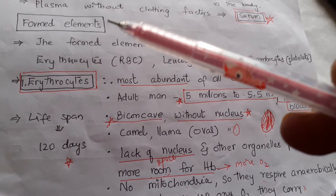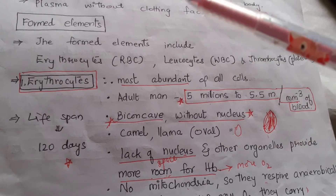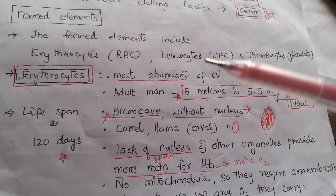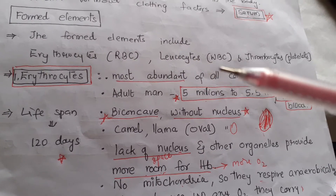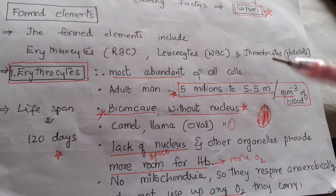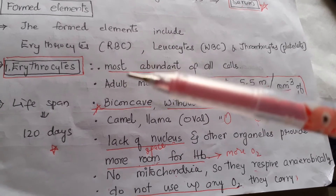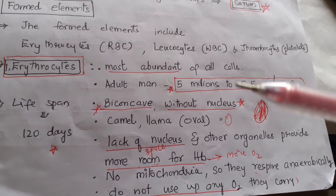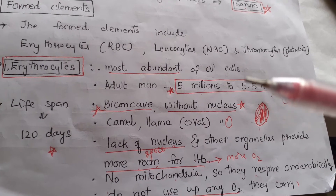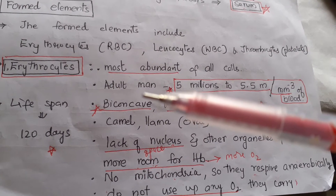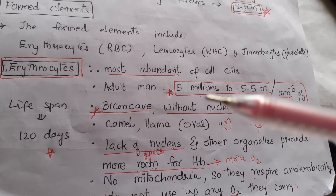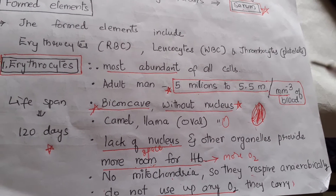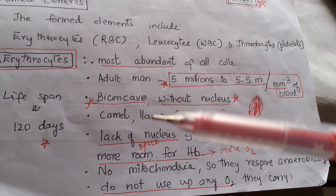After plasma, the formed elements of blood include erythrocytes, leukocytes, and thrombocytes. Erythrocytes are also called RBC or red blood cells. These are the most abundant of all cells in the blood, and an adult man contains 5 million to 5.5 million per cubic millimeter of blood. They are biconcave in shape.